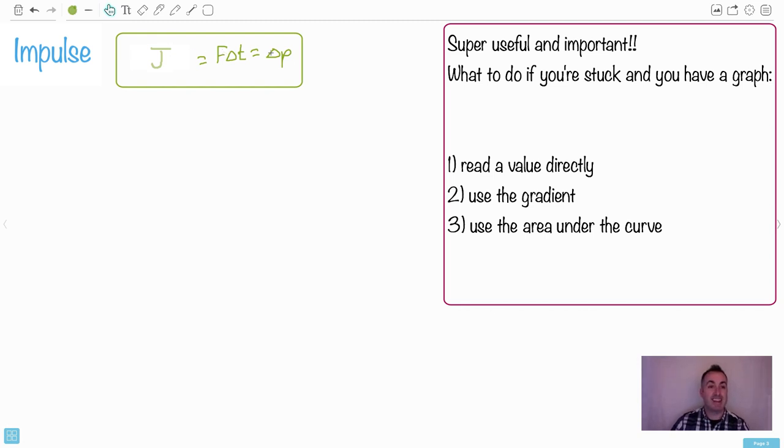So what does this mean? Well, impulse then is a change in momentum. That's the key thing. So impulse is a change in momentum. It's a change in momentum. So if the momentum changes, then there's been an impulse.